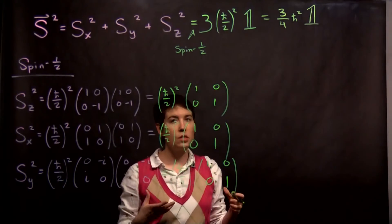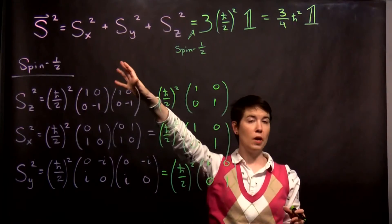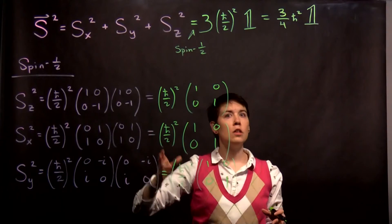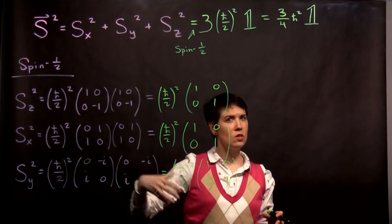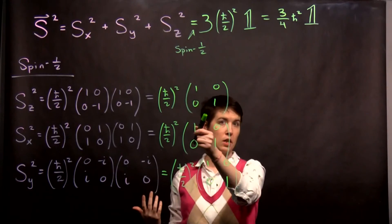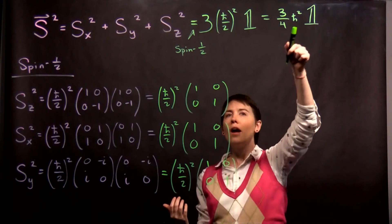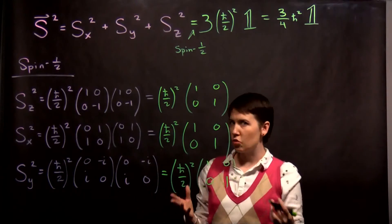So that identity matrix will, in fact, appear regardless of which spin we're talking about. So if it's spin one, instead of it being two-by-two matrices, we have three-by-three matrices. So, instead of it being just a two-dimensional identity matrix, it would be a three-dimensional identity matrix. But this number out front maybe does change.